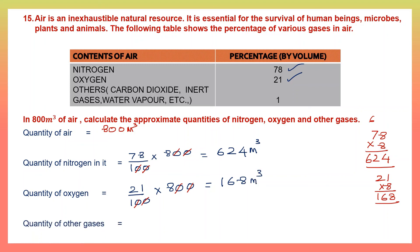Now we need to find out the quantity of other gases. According to the table, it's 1%. So 1 by 100 into 800. Let's cancel. What we have left in the numerator is simply 1 into 8. 1 eight is 8. 8 meter cube. So we have found the quantity of nitrogen to be 624 meter cube, oxygen 168 meter cube, and other gases 8 meter cube.